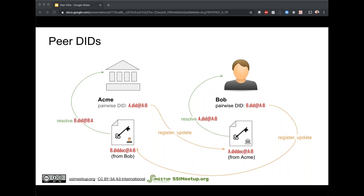Michael asks: where do private DID docs live if not on a public blockchain? The answer is that they live in storage controlled by Bob and ACME — on a laptop hard drive, a mobile device, or a server in ACME's data center. The key is that the storage is under the control of the respective parties only. Bob should not put his DID doc in a publicly shared Dropbox folder, but he can put it on his private hard drive or a thumb drive.